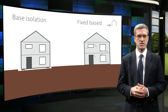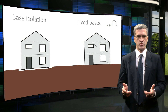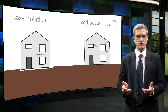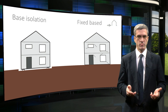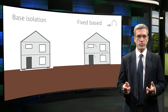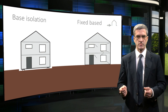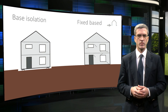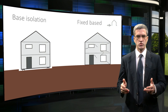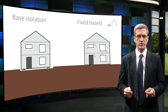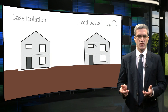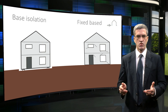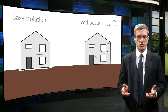Practical base isolation systems have to incorporate some minimum horizontal resistance to prevent wind-induced movements and preferably some recentering capability to control permanent horizontal displacements. You will have noticed from the animation that the vast majority of deformations happen across the isolators. As a rule, base isolation reduces rather than eliminates horizontal seismic demands on structures.